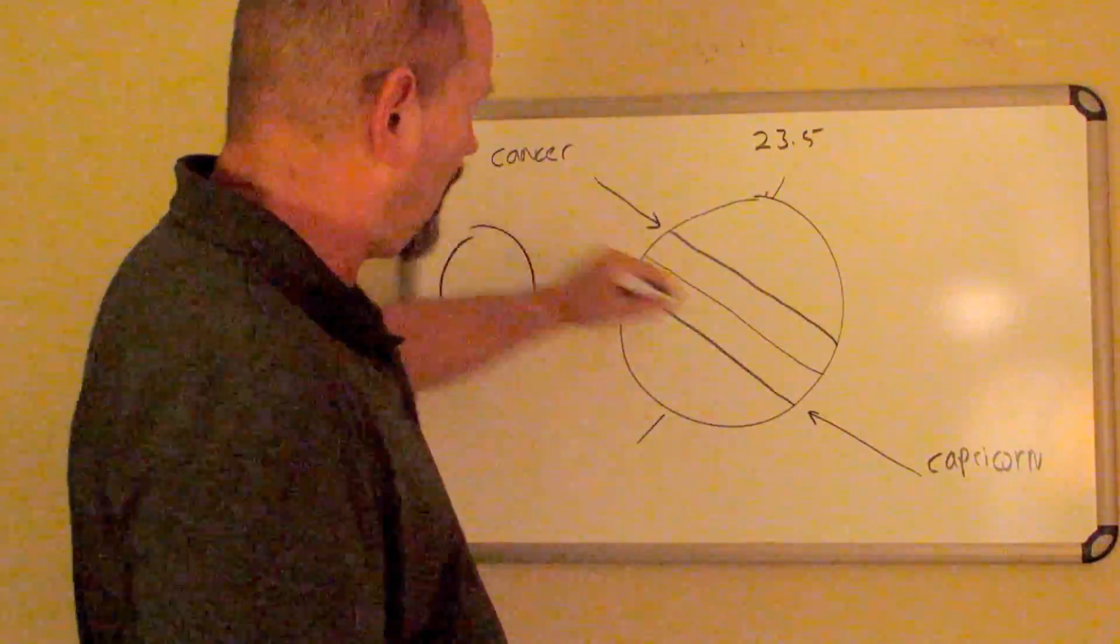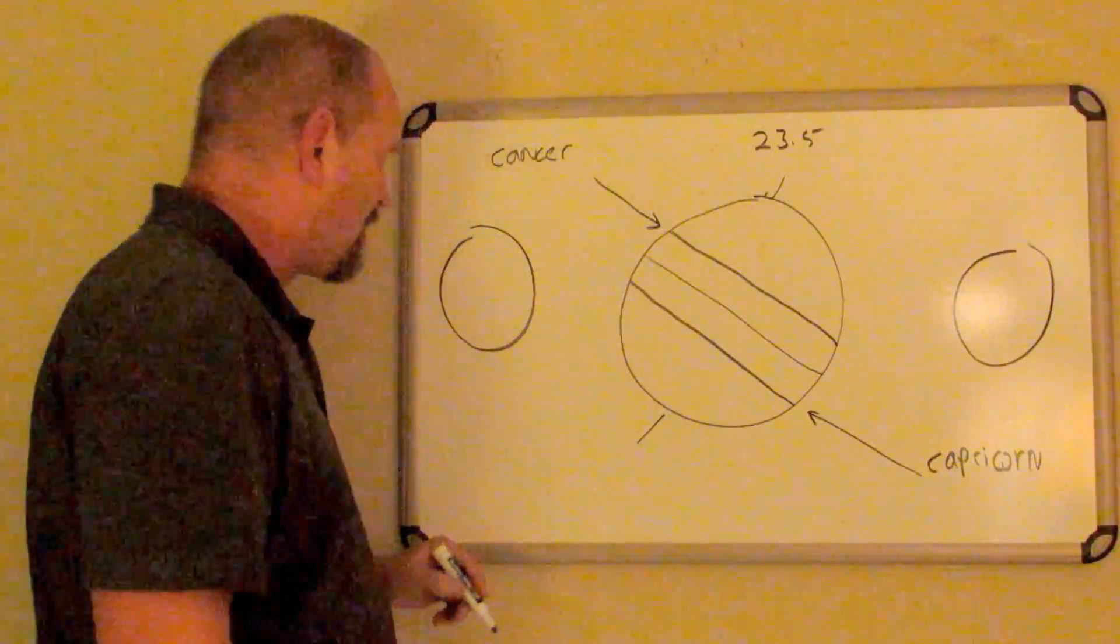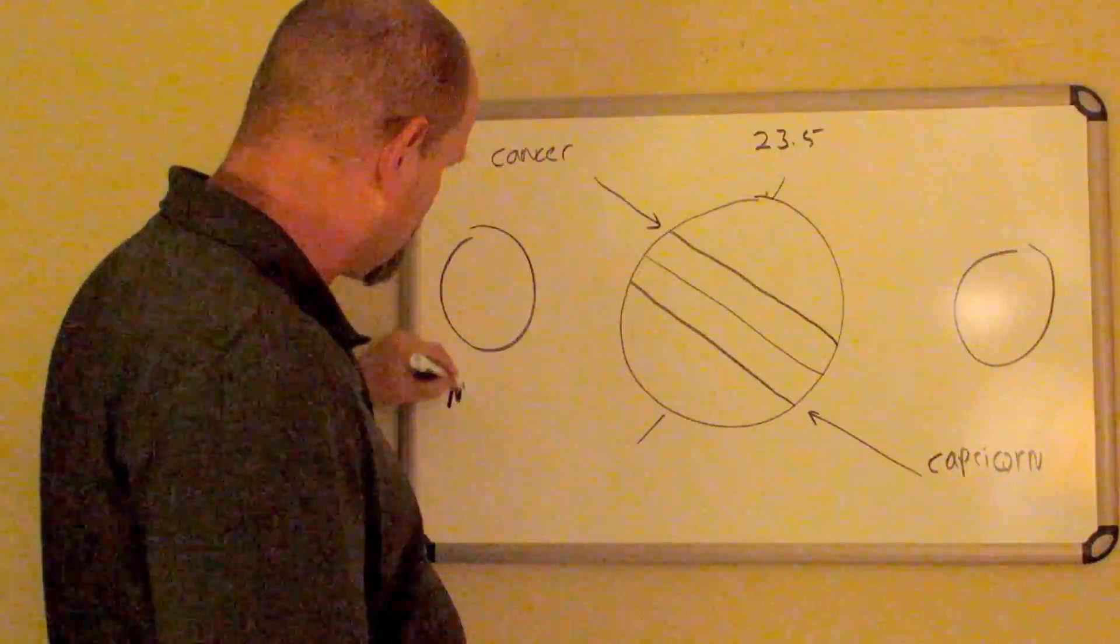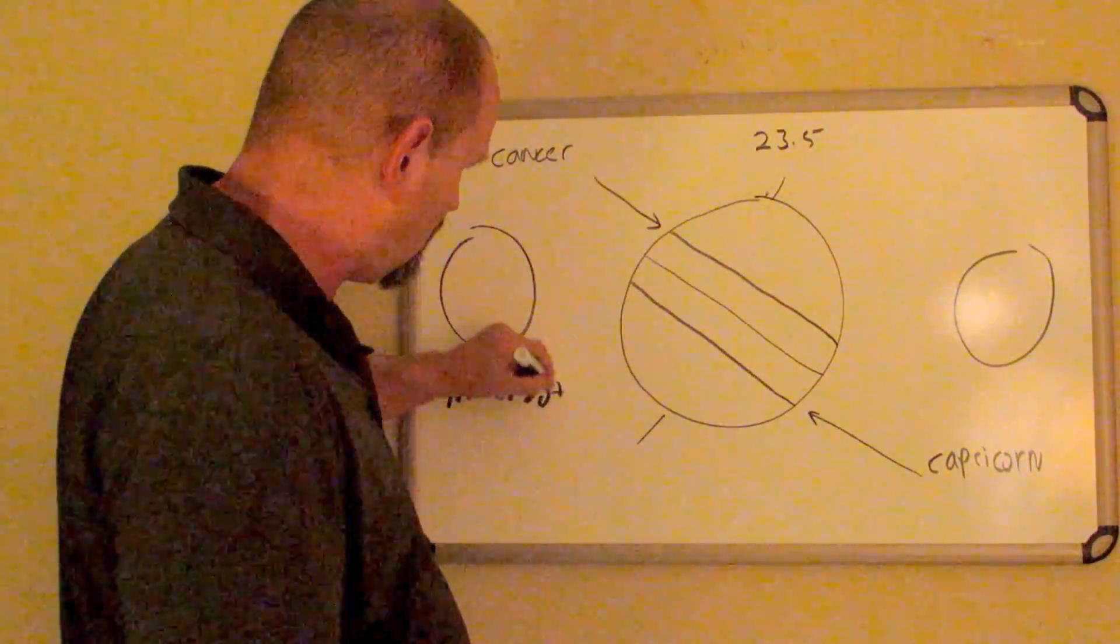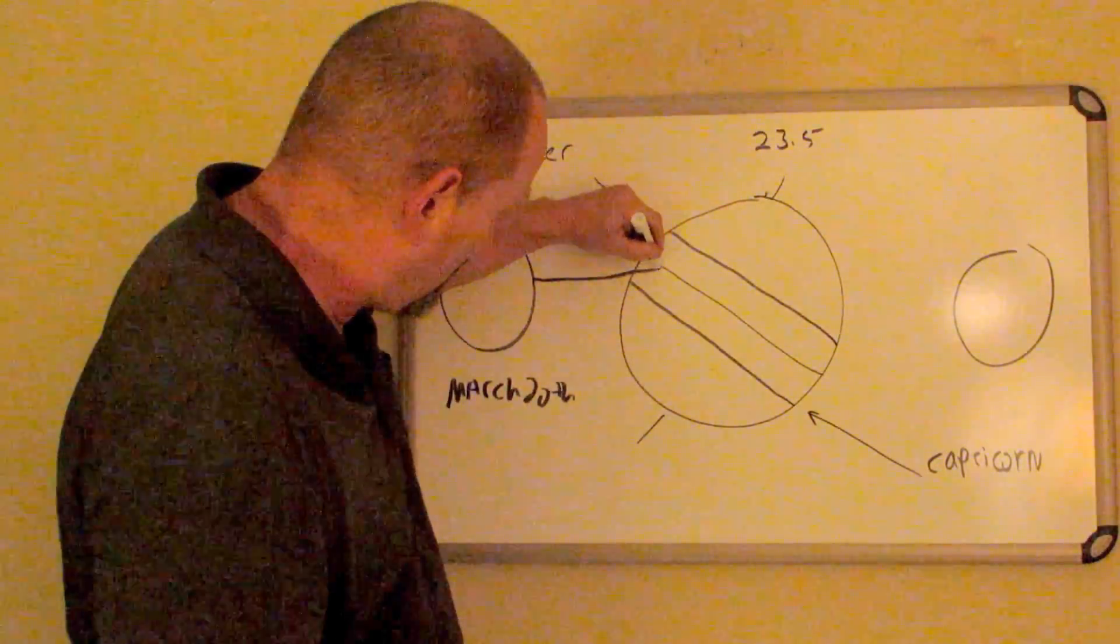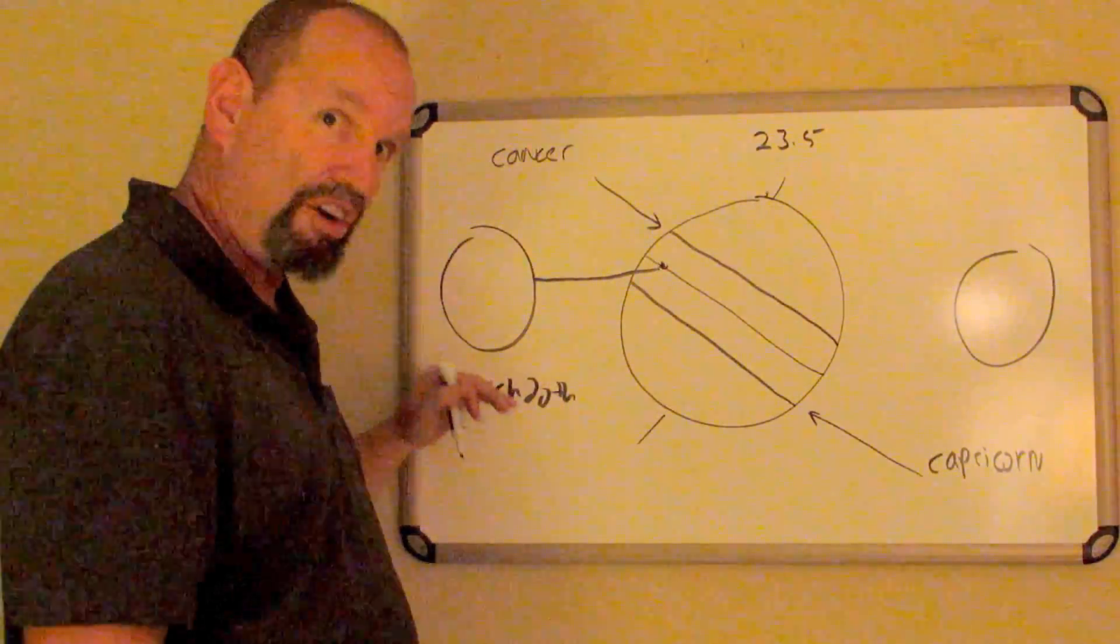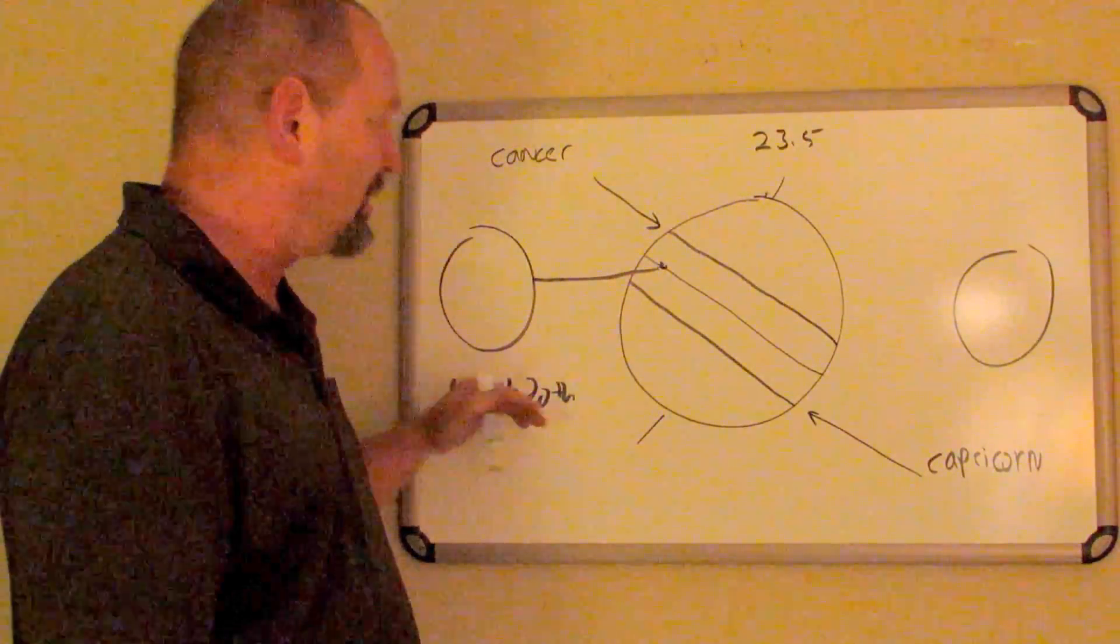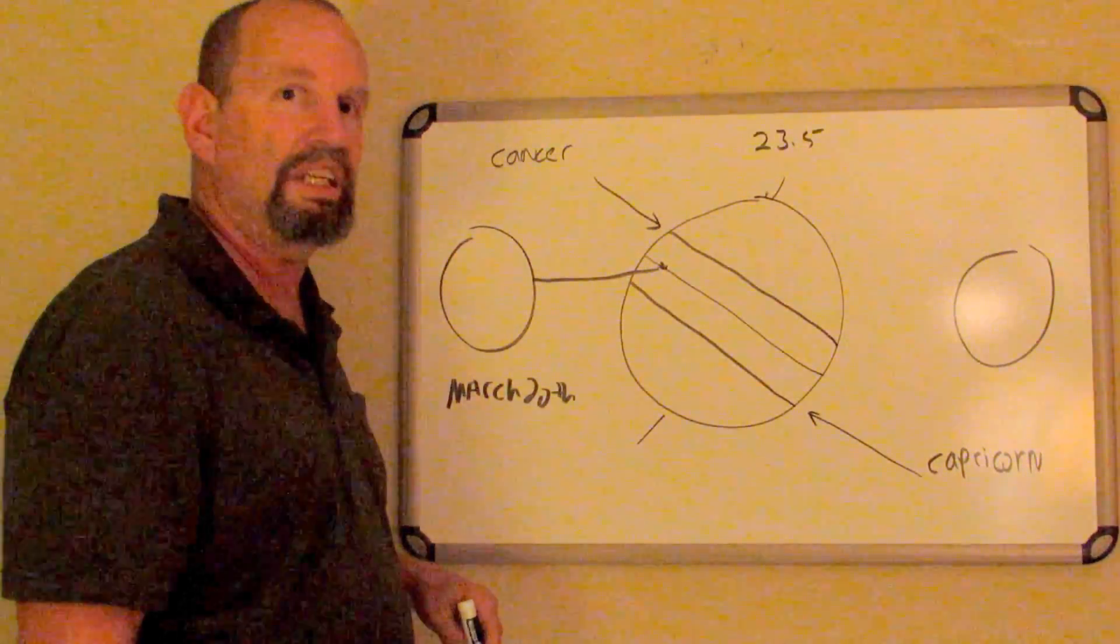This is our sun. Of course, it's much further away. On the first day of spring, typically March 20th, the sun is shining right on this line. Typically spring, March 20th, sometimes that varies a little bit. The sun is shining right on that line. That's what we call the vernal equinox.